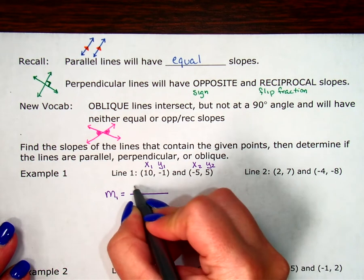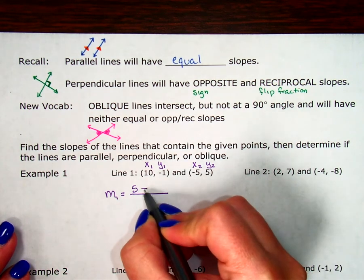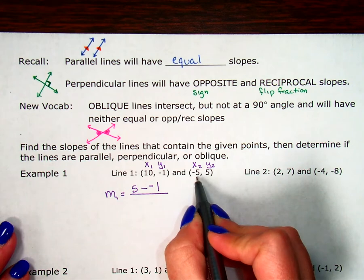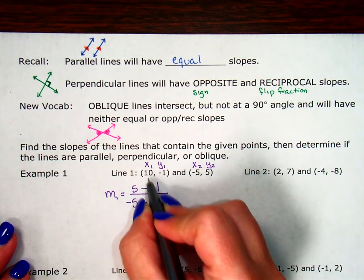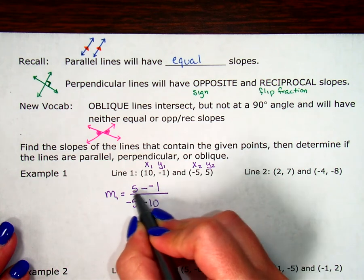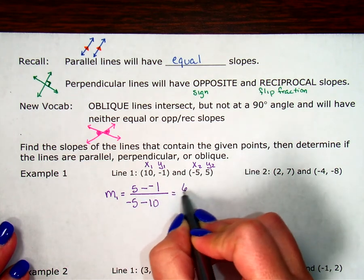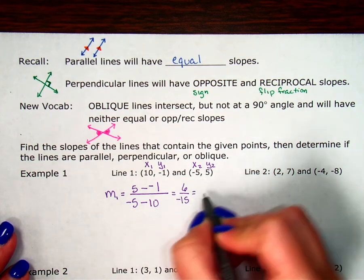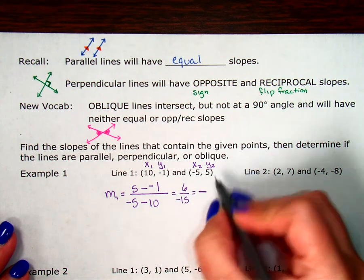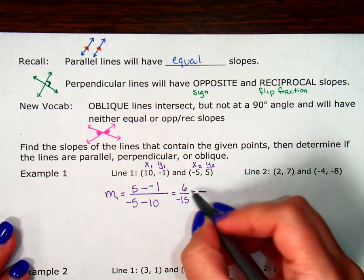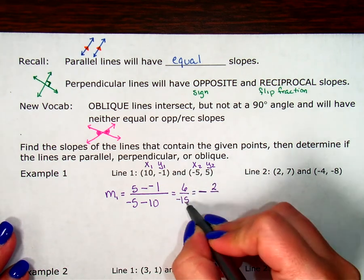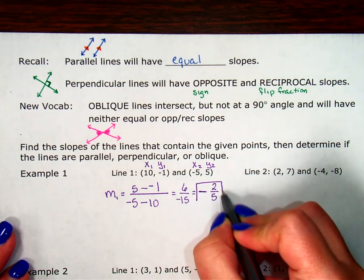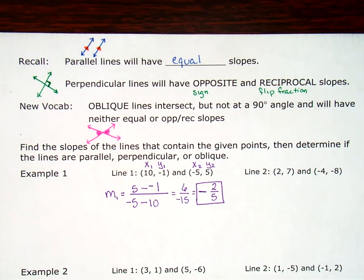Make my fraction. Start with my second y, 5 minus my other y, negative 1. I know I already have a minus, but I have to put the negative 1, so I remember to add there. And then my second x, negative 5, minus 10. This is really plus, right? 5 plus 1 is 6, over negative 5 minus 10 is negative 15. The negative floats out front. 6 over 15, those are both divisible by 3. 3 goes into 6 two times. 3 goes into 15 five times. So negative 2 fifths is my first slope.